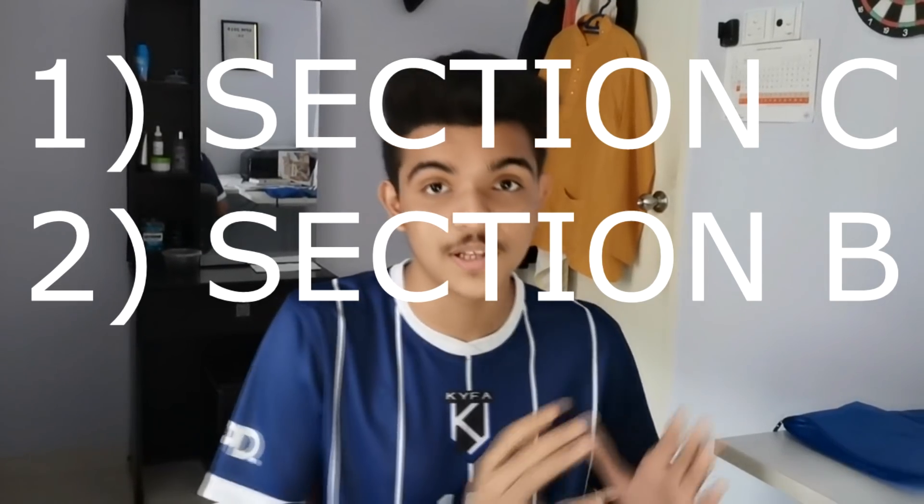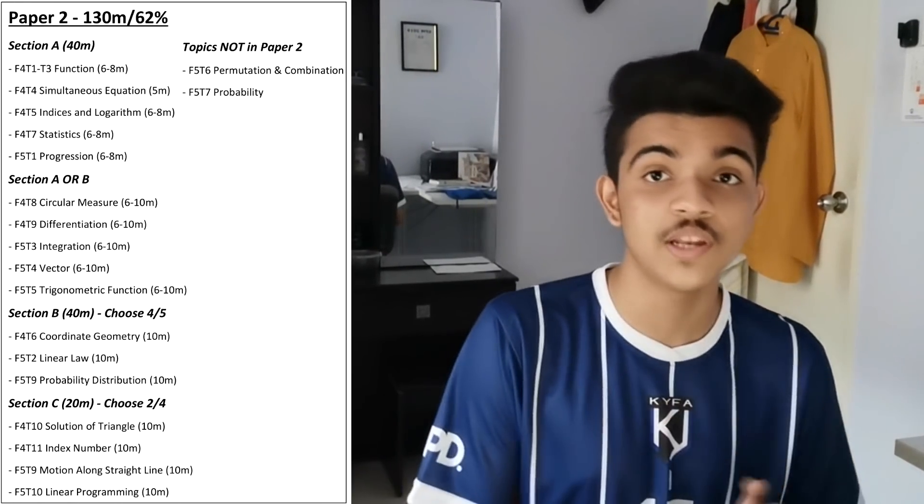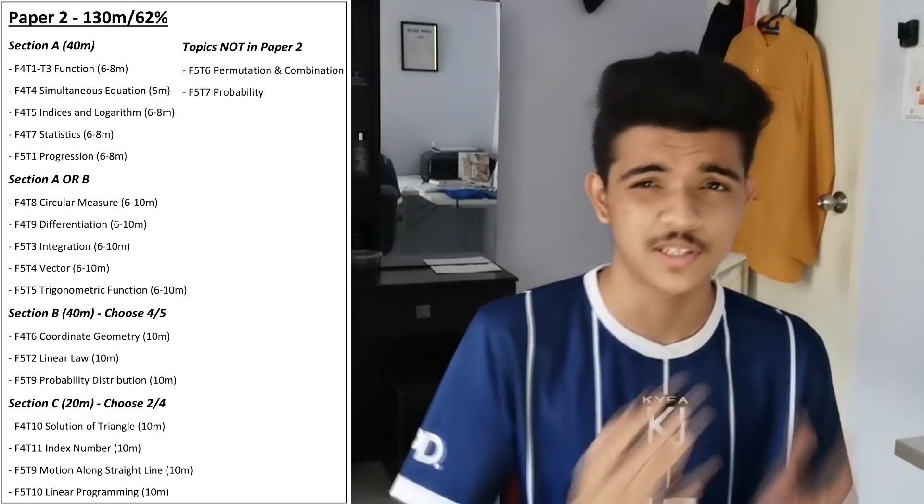Answering easy questions will also increase your confidence and give you momentum for the rest of the paper. For Paper 2, when you get your answer sheet, label each page 1 to the end because you'll be using one page per question. Then start Paper 2 by answering Section C and B first, and only then Section A. Because Section B and C give more marks per question compared to Section A, we need to make sure that even if you run out of time, you'll get more marks because you've already answered all the big-mark questions. After answering everything you know, just try the hard questions even if you don't know how — your working might give you an extra 1 or 2 marks.